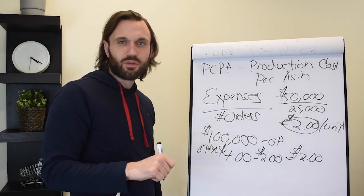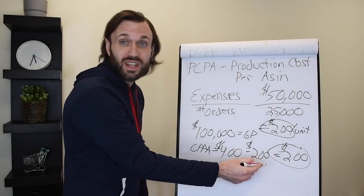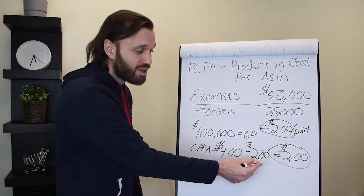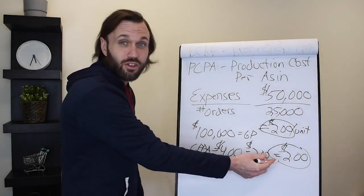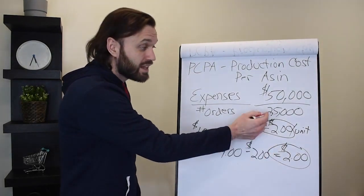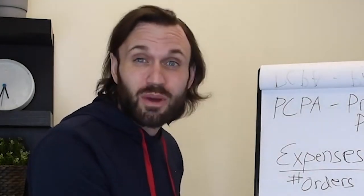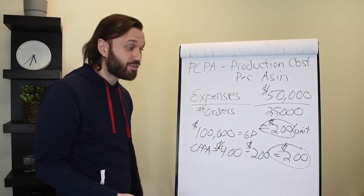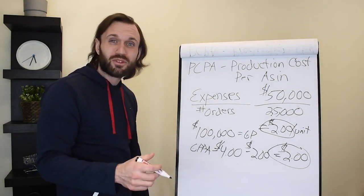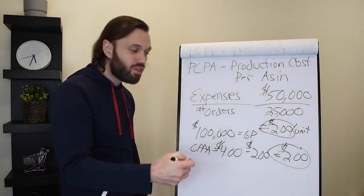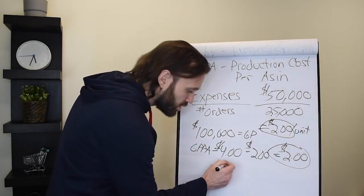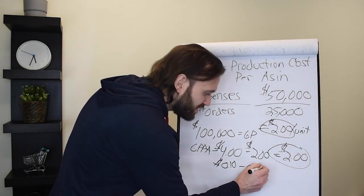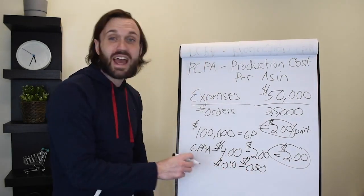This $2 in net profits is actually pretty healthy, because if you're doing $2 per ASIN on average times 25,000 orders, that means your net profit after all your expenses is $50,000 a month. That's huge. That's $600,000 a year. That's phenomenal.